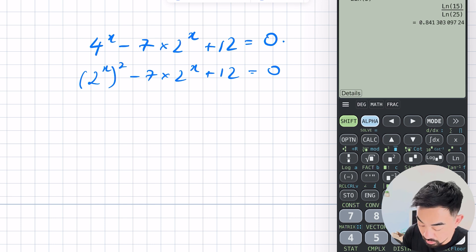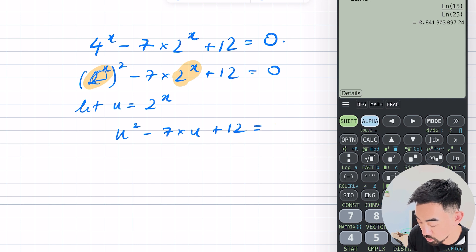Now hopefully you can see here you've got 2 to the power of x in all three terms. So what we can do is we can say let u equal 2 to the power of x. So u squared minus 7 times u plus 12 equals 0. Factorize that so that's u minus 4 u minus 3 I believe is equal to 0. So u is equal to 4 or 3.